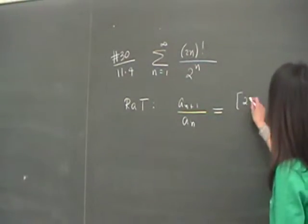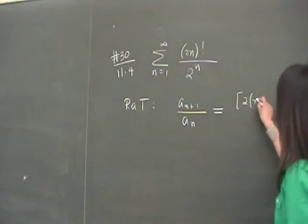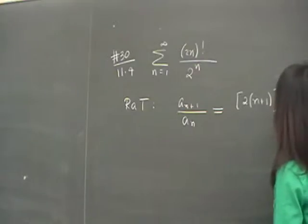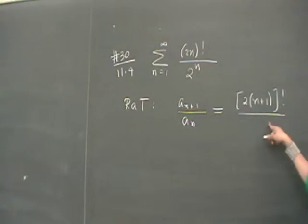So that will be, let me use brackets. So instead of n, you will have n plus 1 factorial, over 2 to the n plus 1. Let me write the 2 to the n plus 1 here.